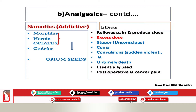The second class of analgesics is narcotics — addictive or habit-forming drugs. Narcotics like morphine, heroin, and codeine are also referred to as opiates because they are obtained from opium. Effects include relieving pain and producing sleep, but an excess dose produces stupor (unconsciousness), coma, convulsions, and can cause untimely death. They are sometimes used in post-operative treatment or for cancer pain.